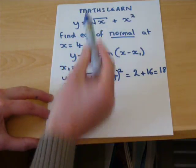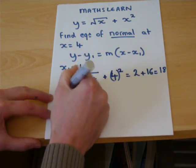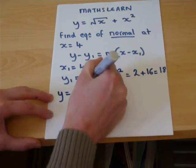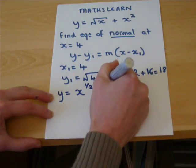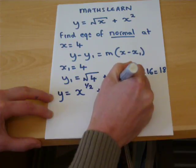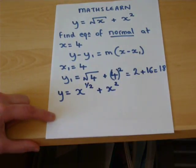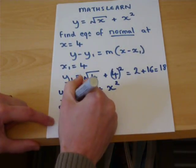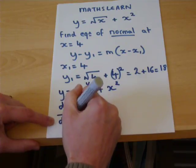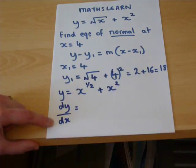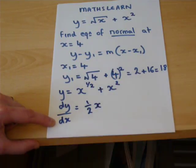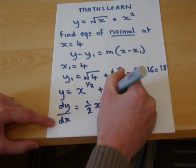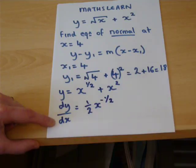Now, we have a square root there. We can write that as a power, x to the power of the half plus x squared. We can then differentiate, times by the power and subtract 1 from the power.